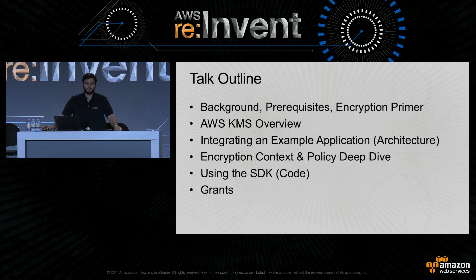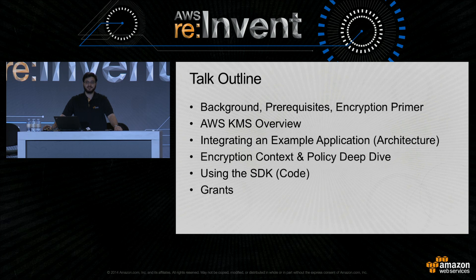We're going to start with a brief background and overview of encryption — I promise I'll only spend five minutes on it, and if you want a more in-depth treatment, there are references at the end. We'll go over what the AWS Key Management Service is, how it works, what it can do for you, walk through an integration of an example application, go into some depth on encryption context and the policies you can write about it, look at some code samples using the Java SDK, and then we'll look at grants.